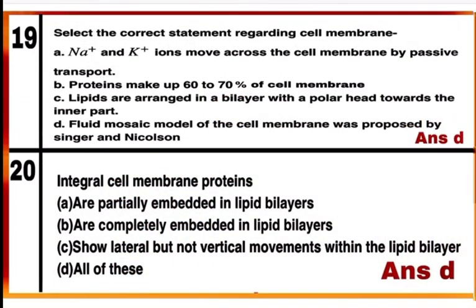Question 19: Select the correct statement regarding the cell membrane. Option D — the fluid mosaic model of cell membrane was proposed by Singer and Nicholson — is the correct statement. According to the fluid mosaic model proposed by Singer and Nicholson in 1972, corrected statement B is: proteins make up 50 to 60 percent of the cell membrane.